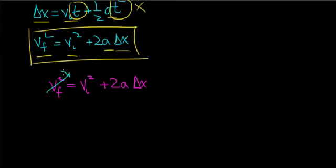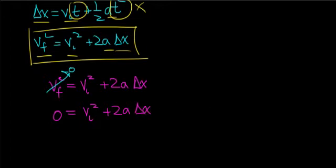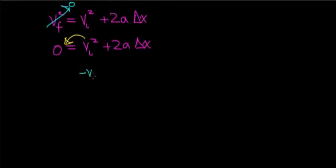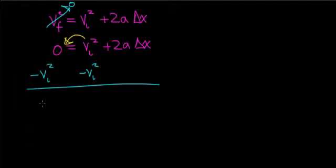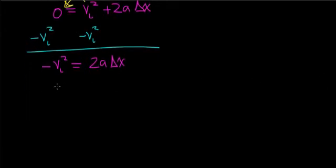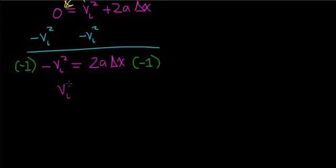We know that our final velocity is 0, so we rewrite this as 0 = v_i² + 2aΔx. We then subtract v_i² from both sides, giving us negative v_i² = 2aΔx. We then multiply both sides by negative 1, so v_i² = negative 2 times the acceleration times the change in distance.